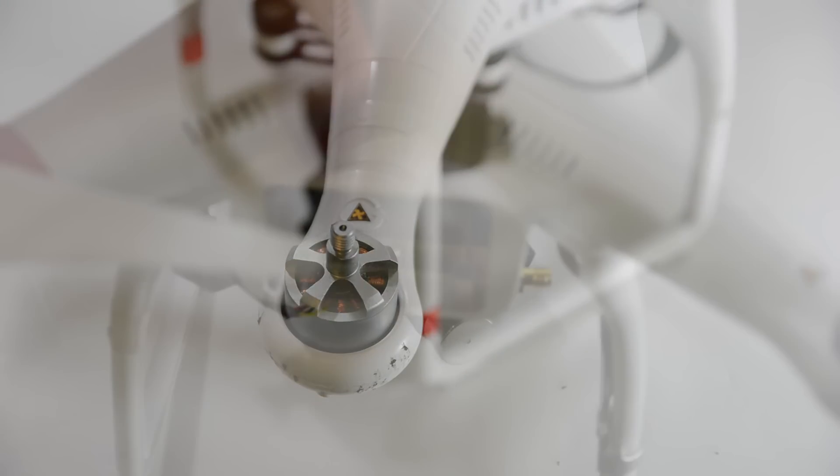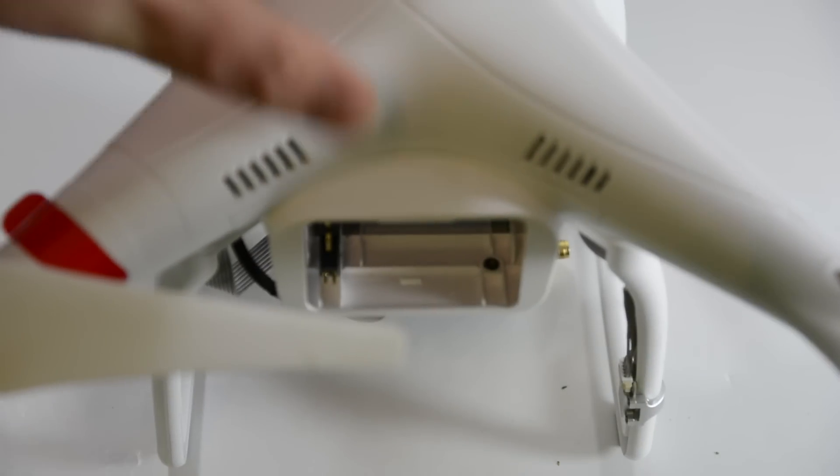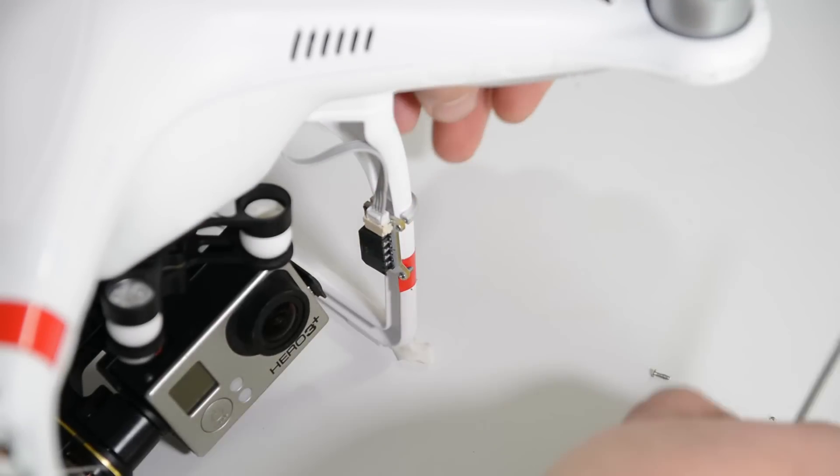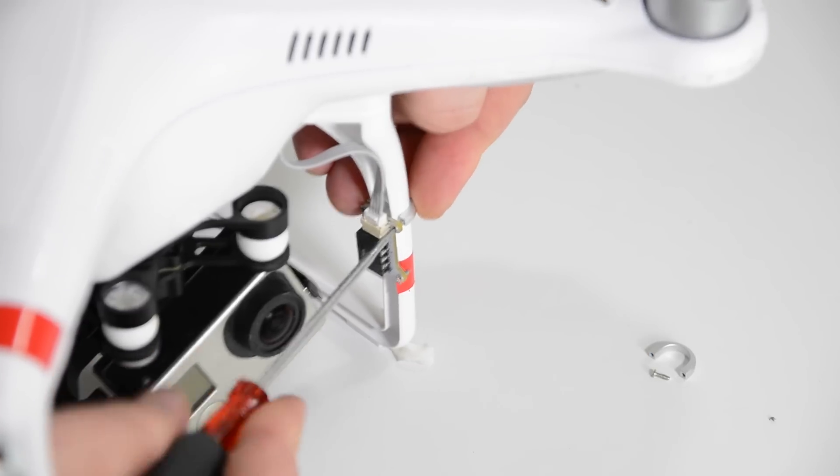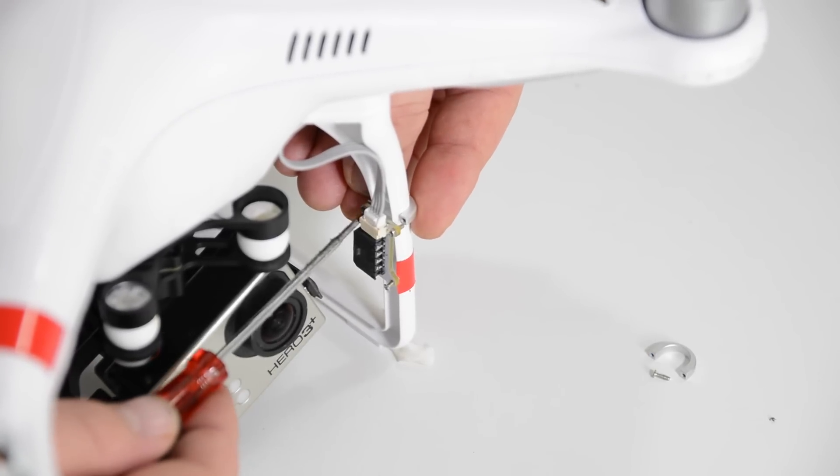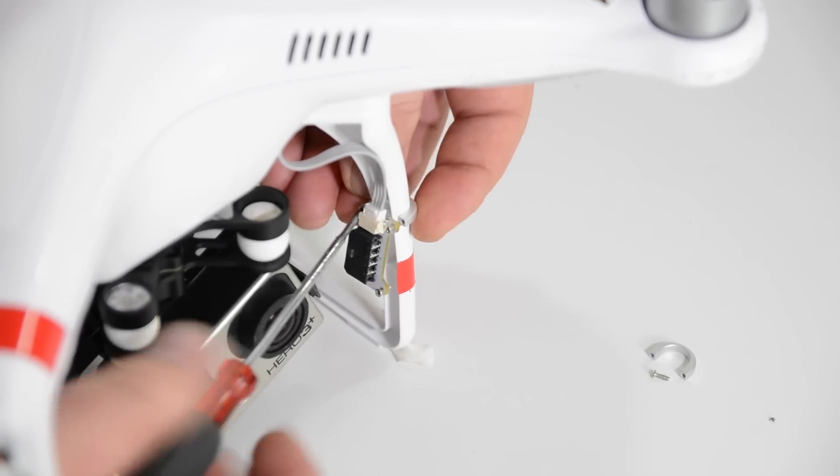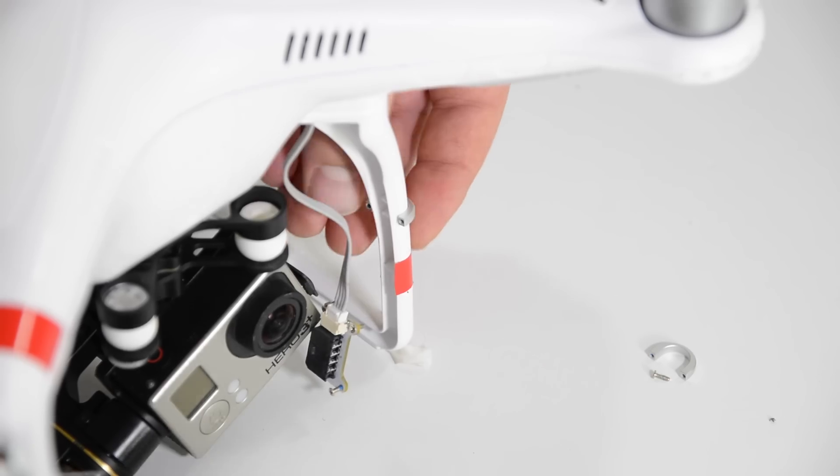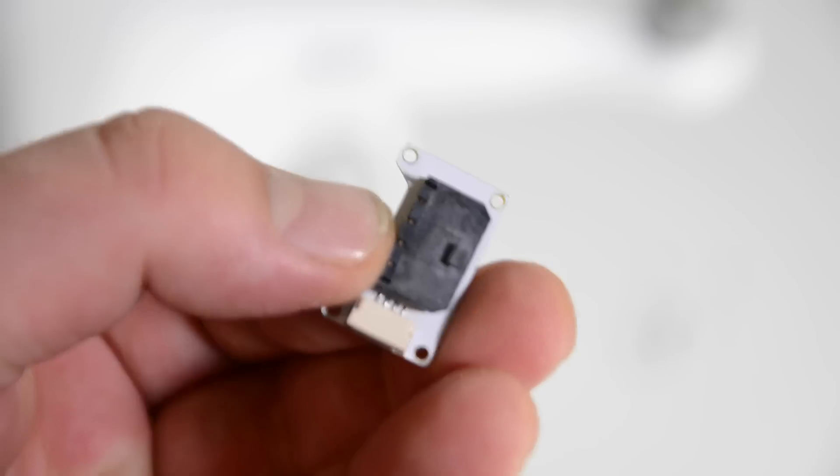Now to get started with the install you'll first want to remove the propellers off the quadcopter and also take out the battery. You'll want to remove the canvas located on the leg of the quadcopter and there's four screws that hold this on and also some tape. You'll just want to unscrew the four screws and disconnect this.